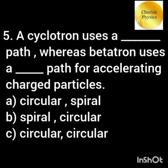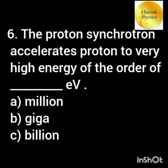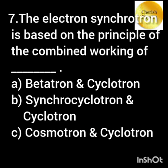A cyclotron uses a spiral path whereas the betatron uses a circular path for accelerating charged particles. The proton synchrotron accelerates protons to very high energy of the order of GeV. The electron synchrotron is based on the principle of the combined working of the betatron and the synchrocyclotron.